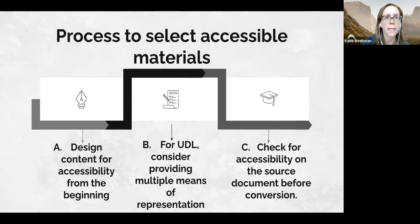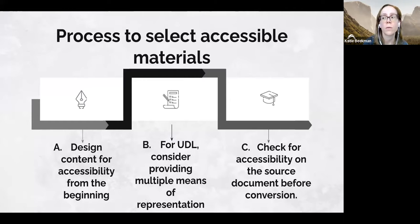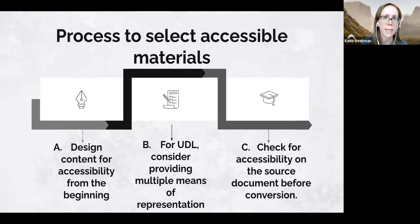The last guideline is to check for accessibility on at least one version. Providing multiple formats can help ensure that students will be able to access at least one version of the material. It's often not practical for all materials to be completely accessible to everyone, so having at least one version that's accessible to everyone is sufficient.